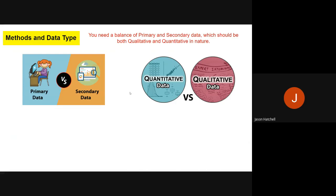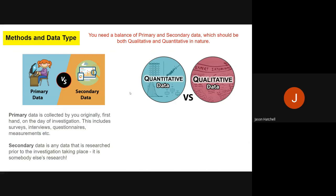Let's go through a reminder of what they are. Primary data is data collected by you originally on the day of investigation, including surveys, interviews, questionnaires, and measurements. Whereas secondary data is researched data, collected by somebody else—data you've used from somebody else's work.